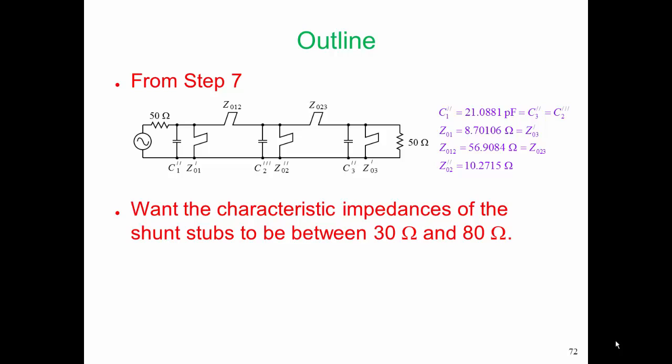In step seven, we realized the inverters using a pi arrangement of stubs. We saw that some of the stubs from our inverter realization were in parallel with some of the existing stubs from our hybrid resonators, and we needed to combine them.